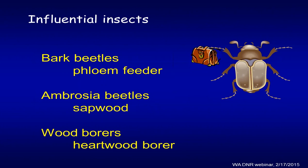Ambrosia beetles create those small pinholes you see in lumber and can introduce a dark brown or black stain. They usually come in fast where there are recently dead or weakened trees. Interestingly, they bring in fungi that the larvae then use as a food source. Then there are wood borers, often considered the most destructive because they attack weakened and dead trees and go all the way into the heartwood. These insects precede fungal activity in most cases and in fact introduce it.